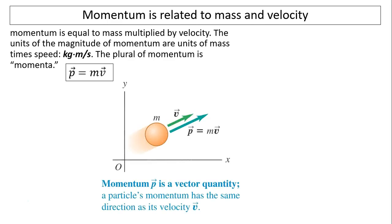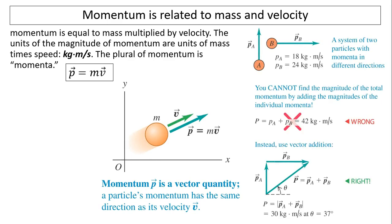A particle's momentum has the same direction as its velocity. Because momentum is a vector quantity, when we add momenta, we have to add according to vector rules. We cannot simply add p equals pA plus pB — we have to use the Pythagorean Theorem to add them.